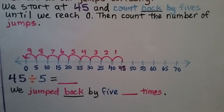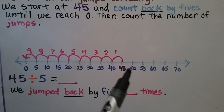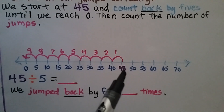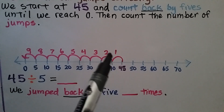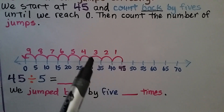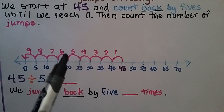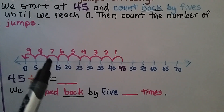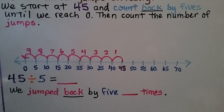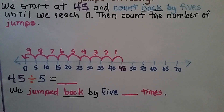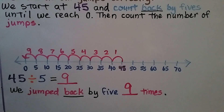We start at 45 and count back by fives until we reach 0: 1, 2, 3, 4, 5, 6, 7, 8, 9. We jumped back by 5 nine times, so 45 divided by 5 is equal to 9.